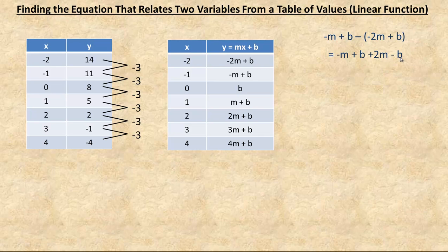Now notice that these b's are opposites, plus b and minus b, so they add to 0. And then negative m plus the 2m just gives you m. So this first difference is m here.